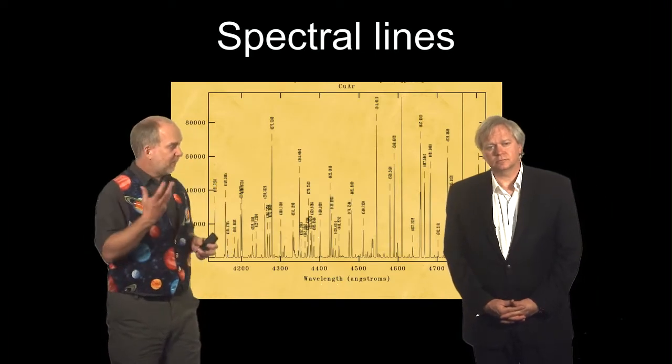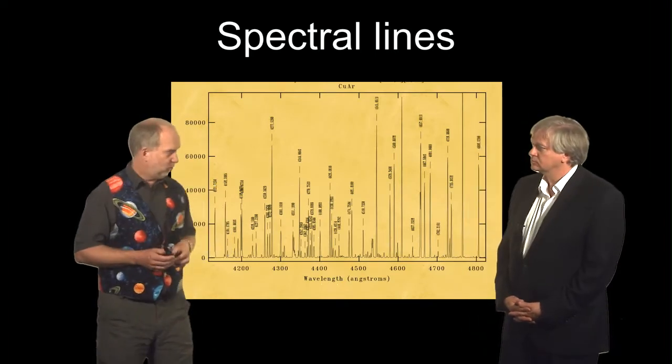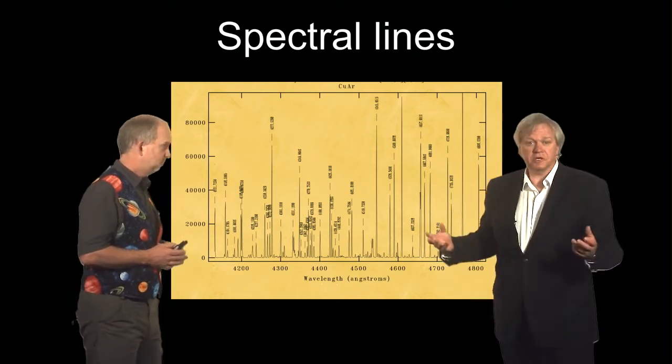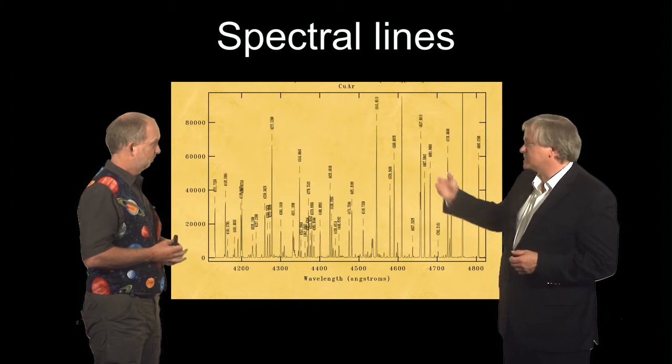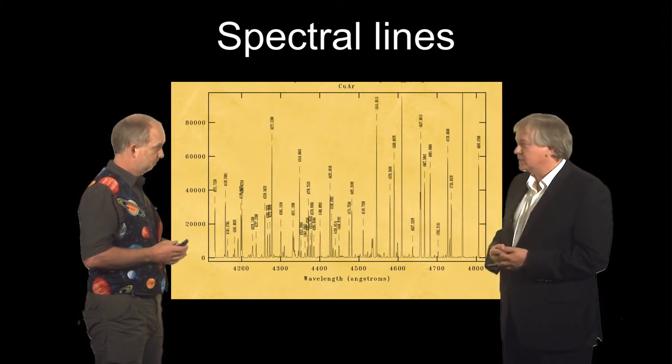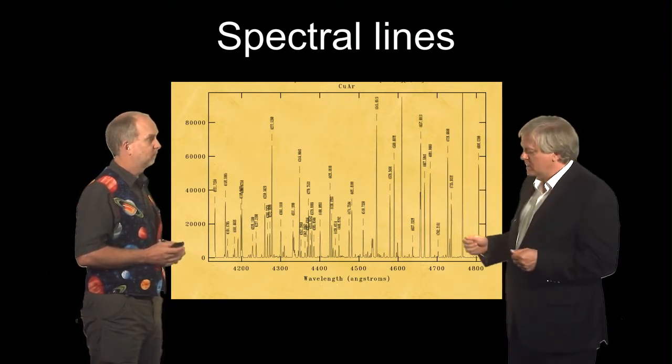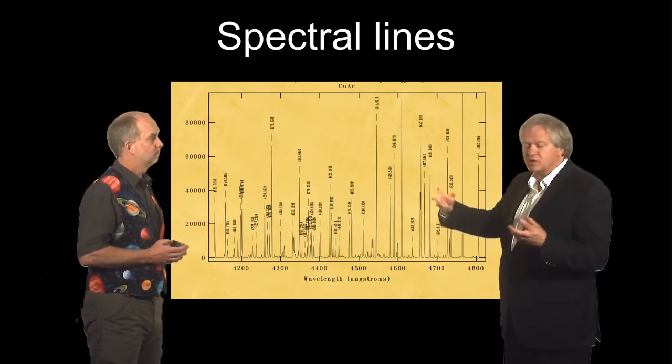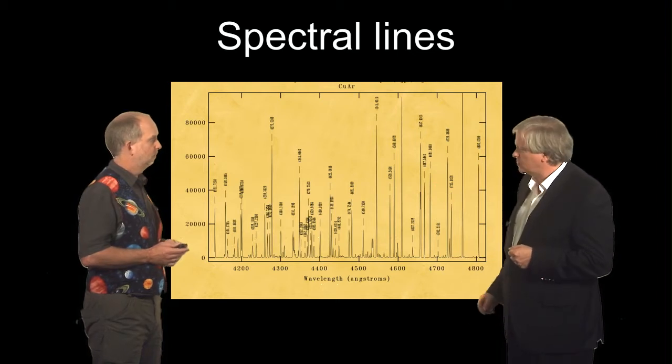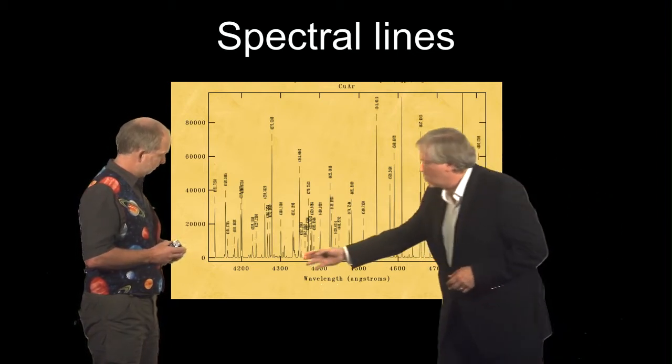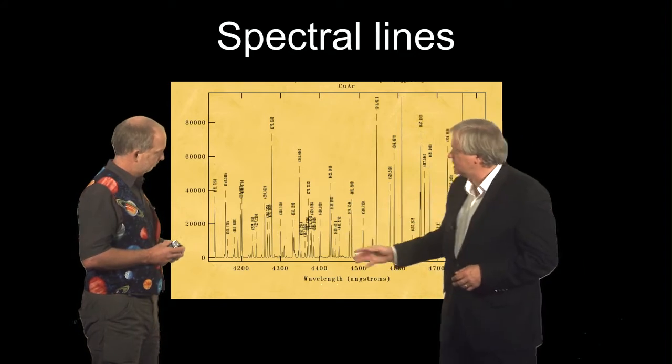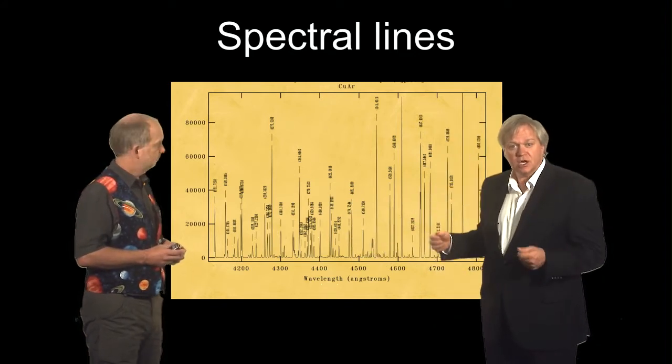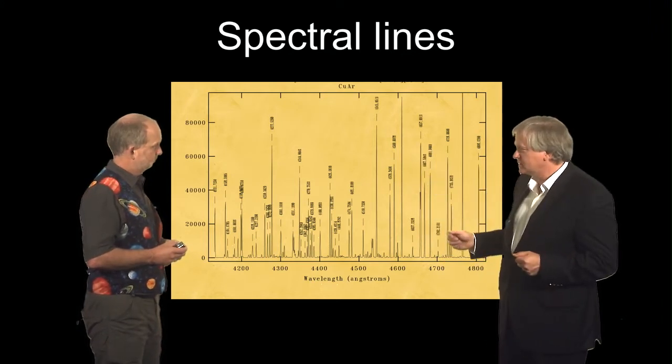With the discovery that when you get a gas and heat it up, it gives a spectrum looking something like this. So this is essentially a tube containing, in this case, copper and argon, and it's something we would put on a telescope. And when you put an electric charge through there, the thing glows like a giant neon sign. And when you take a spectrum of it, where we plot wavelength versus intensity.